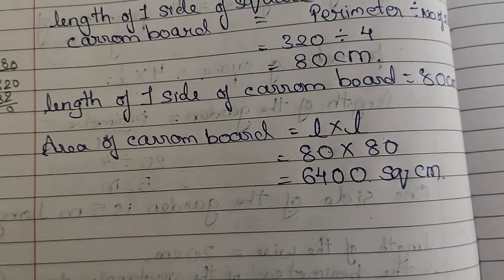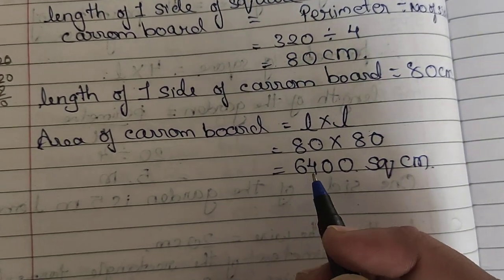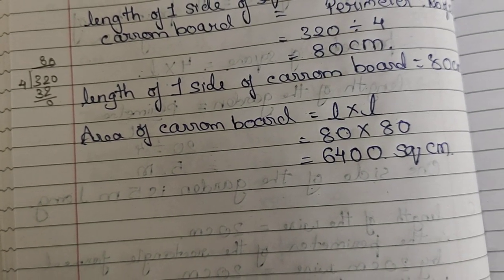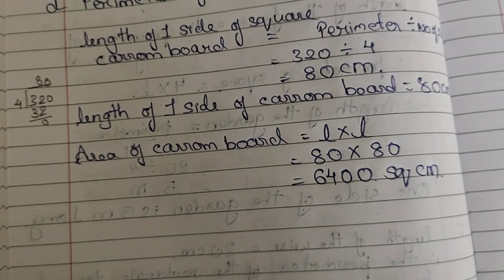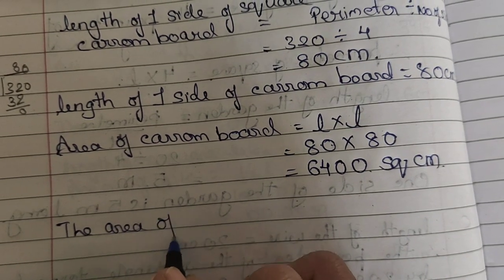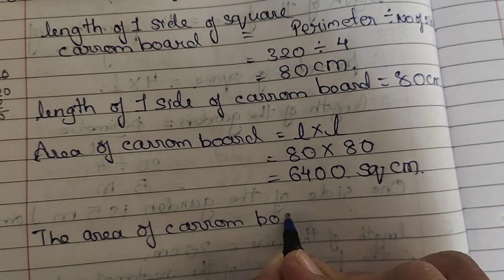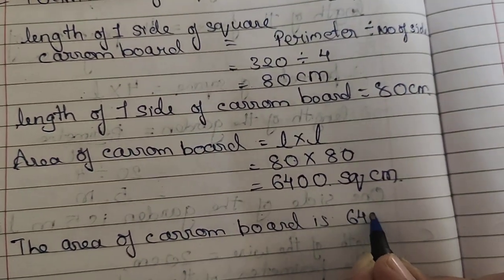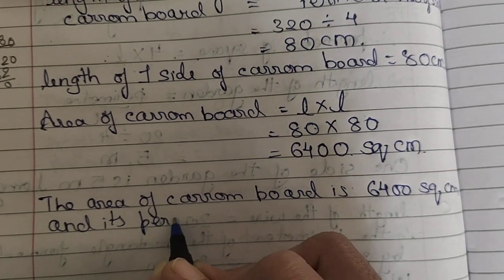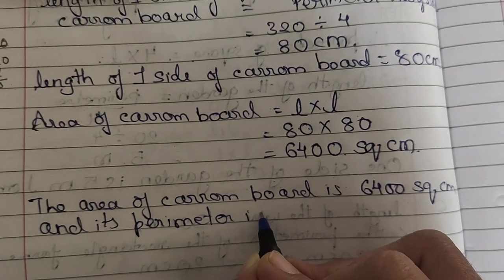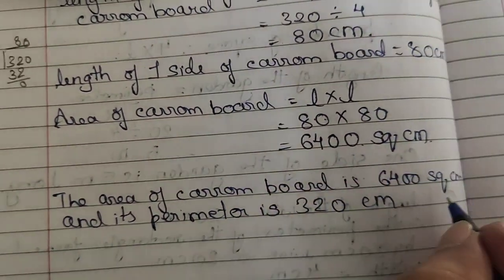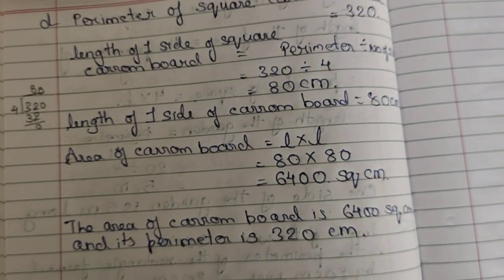The area of the carom board is 6400 square centimeters and its perimeter is 320 centimeters. Students, I hope you have understood these sums. There are two sums that you are supposed to copy down in your notebook.